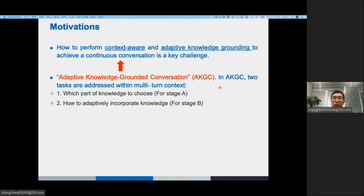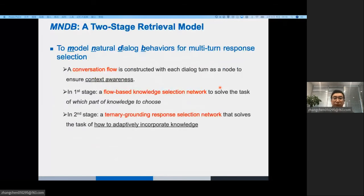To this end, we propose adaptive knowledge grounded conversations called AKGC. In AKGC, we should address two tasks. One, which part of knowledge to choose and two, how to adaptively incorporate knowledge. Previous studies mainly focused on handling the first task. However, they have difficulties on the second task. In AKGC, the knowledge should be used to adapt to all three modes.